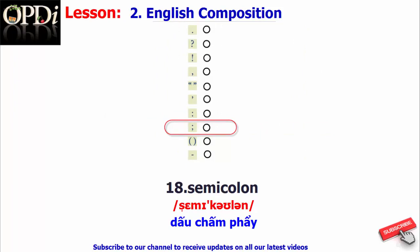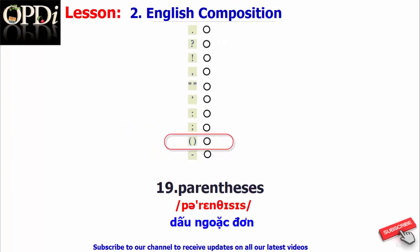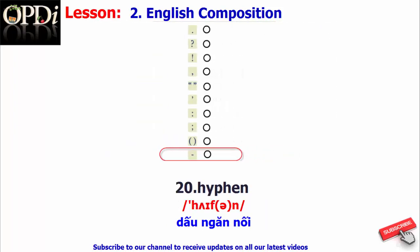Additional punctuation marks include the semicolon, the parenthesis, and the hyphen.